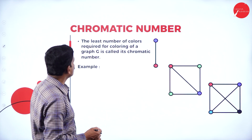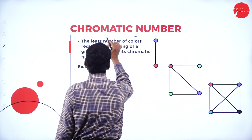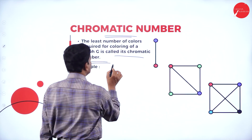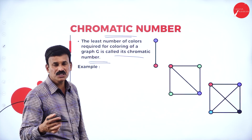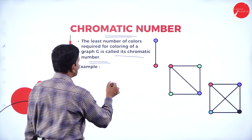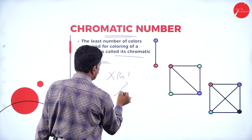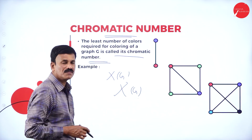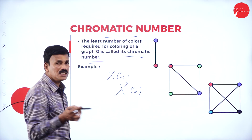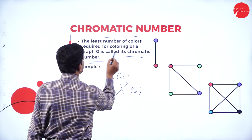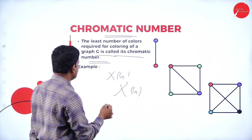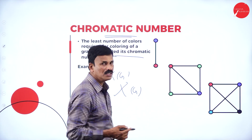Now let us come to the next concept: chromatic number. The least number of colors required for coloring a graph G is called the chromatic number, denoted as Xi of G. Xi of G is the representation of the chromatic number of a given graph. The chromatic number means the least number of colors required to color a graph G, and that is denoted as Xi(G).